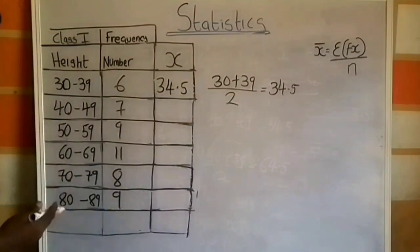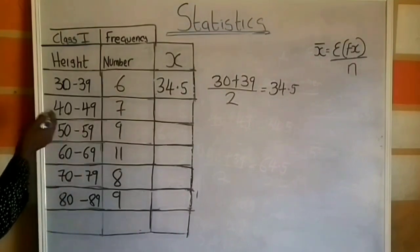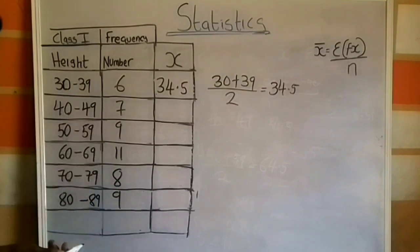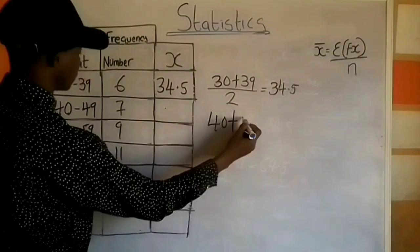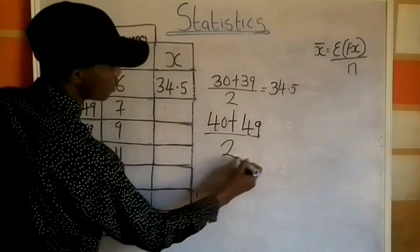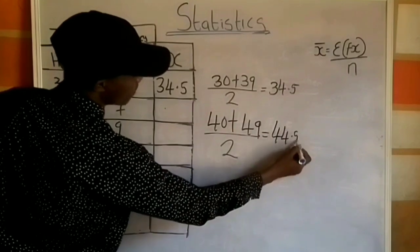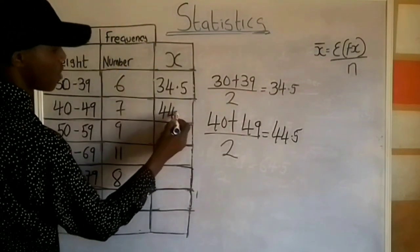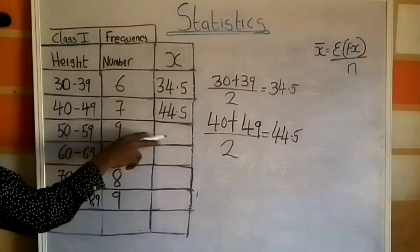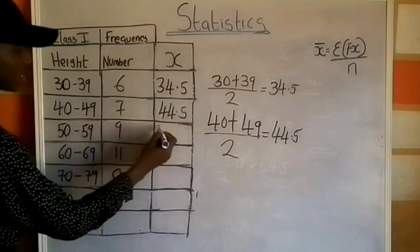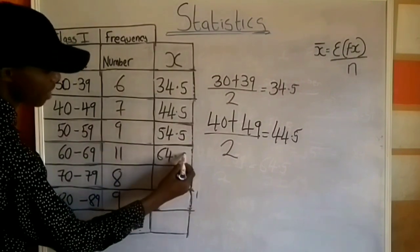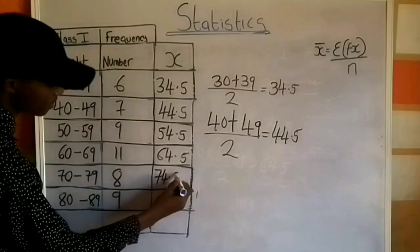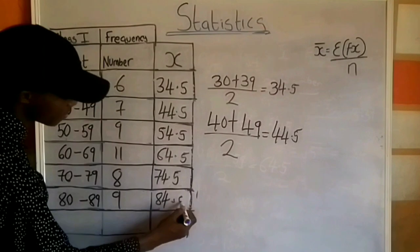The value of x is the midpoint of the class interval, obtained by adding the upper and lower class limits and dividing by 2. For 40–49: 40 plus 49 divided by 2 gives 44.5. For 50–59: 54.5. Then 64.5, 74.5, and 84.5.